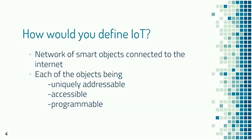In brief, the Internet of Things is a network of smart objects that can be connected to the Internet. The features of these objects are that they should be uniquely addressable, accessible over the Internet, and programmable as well.